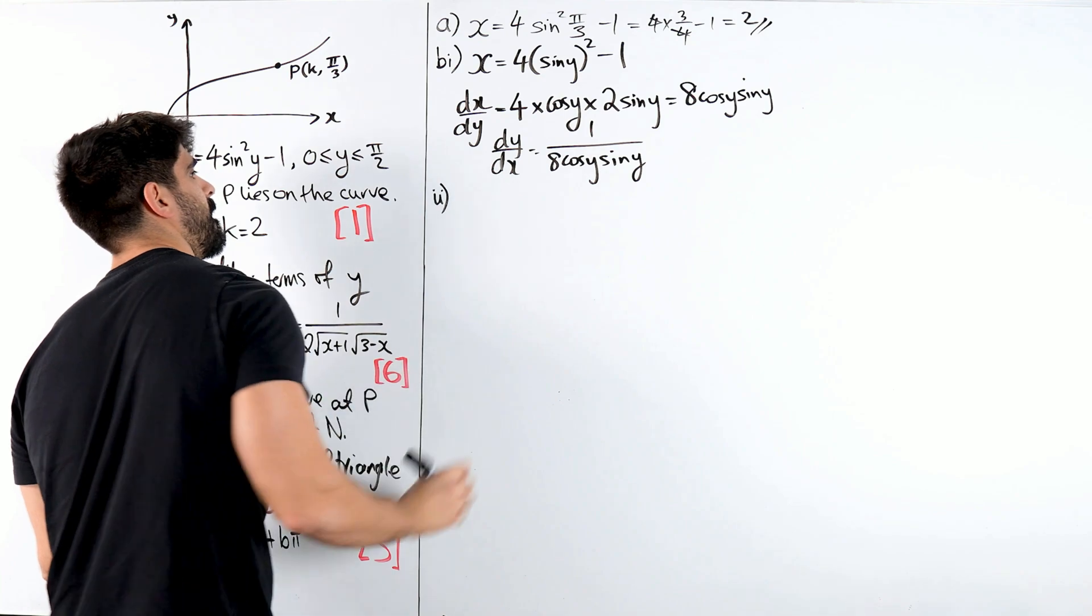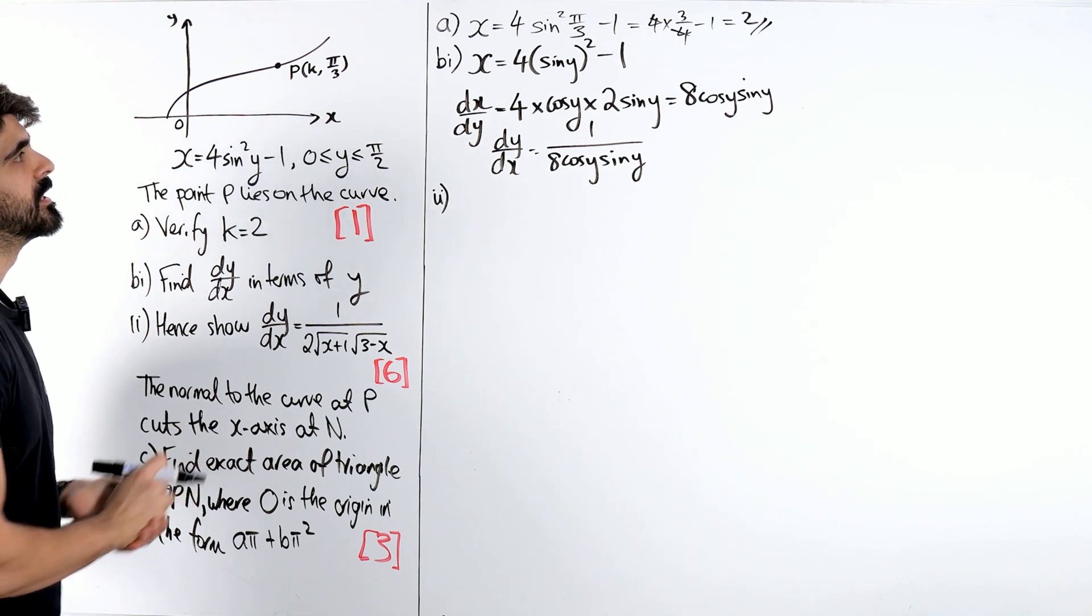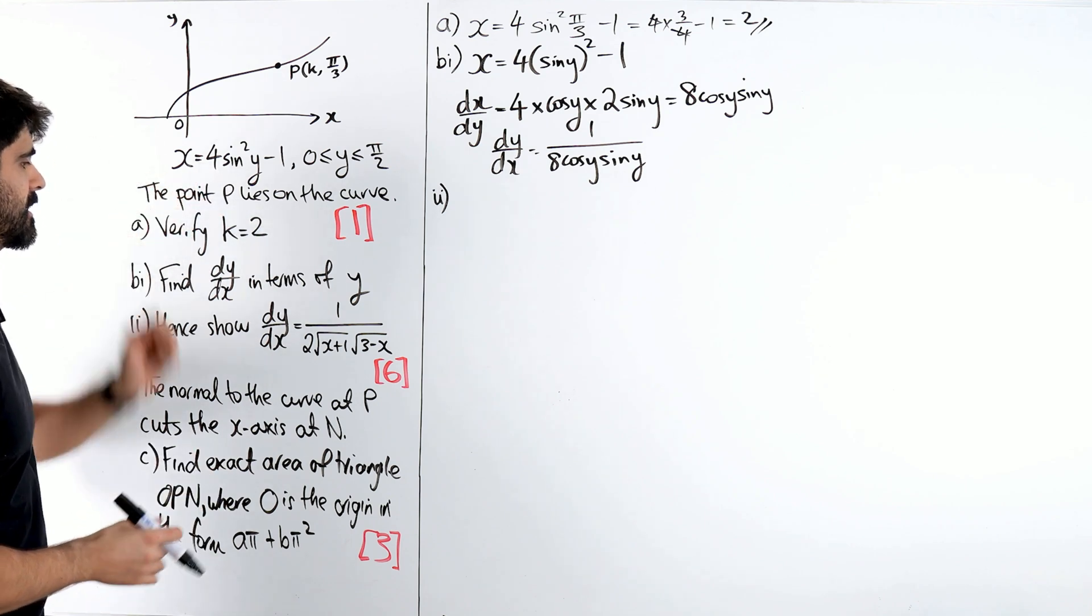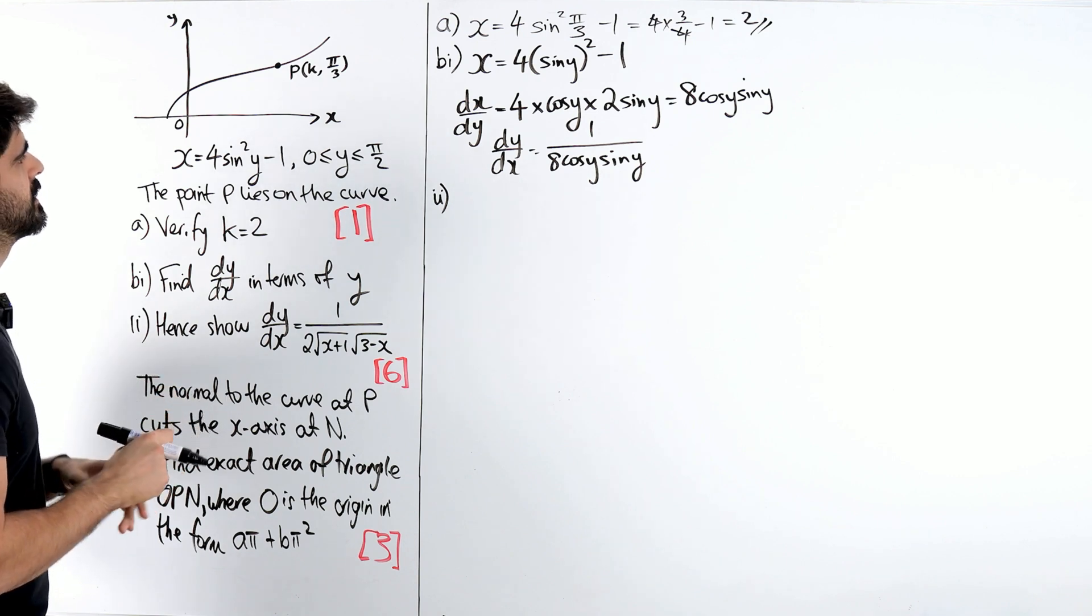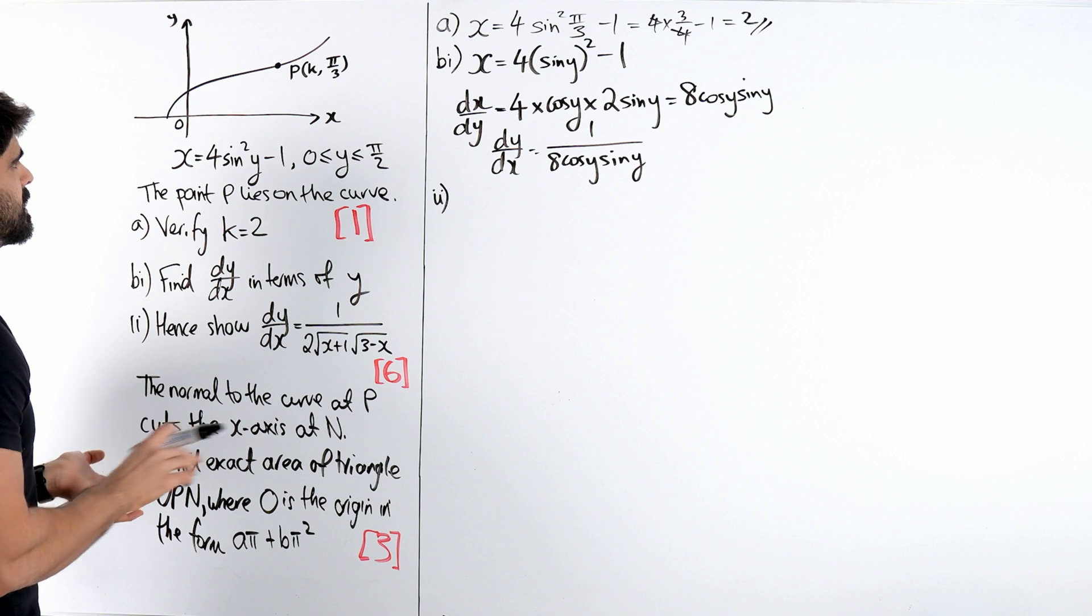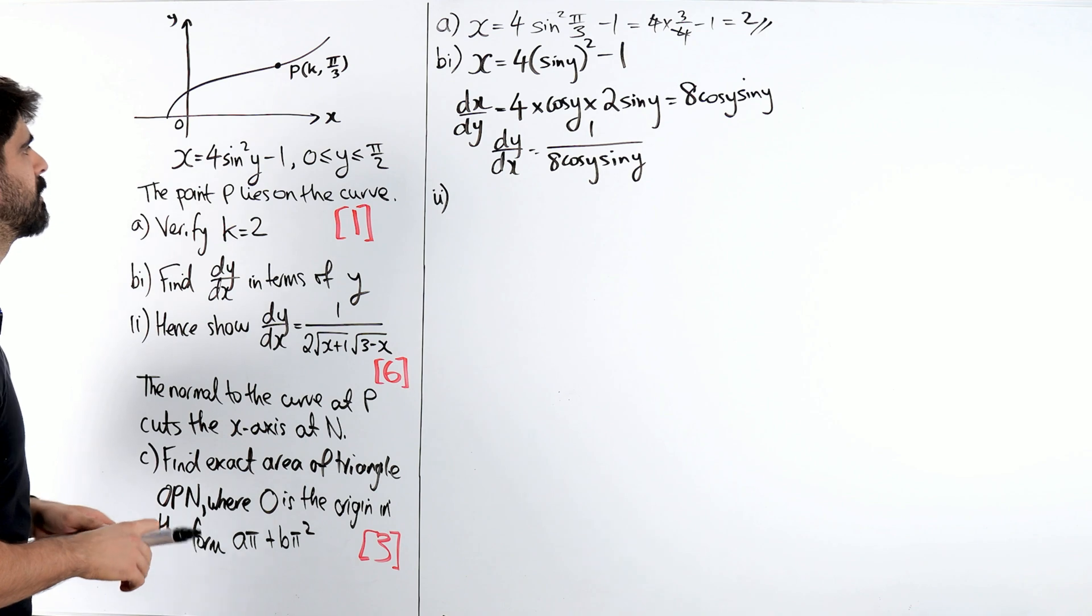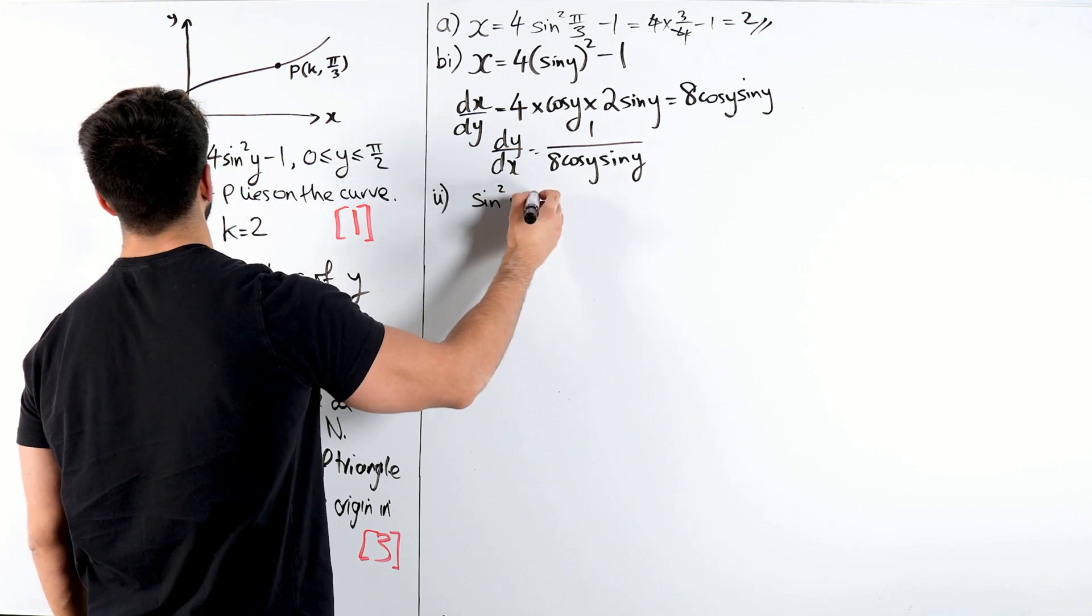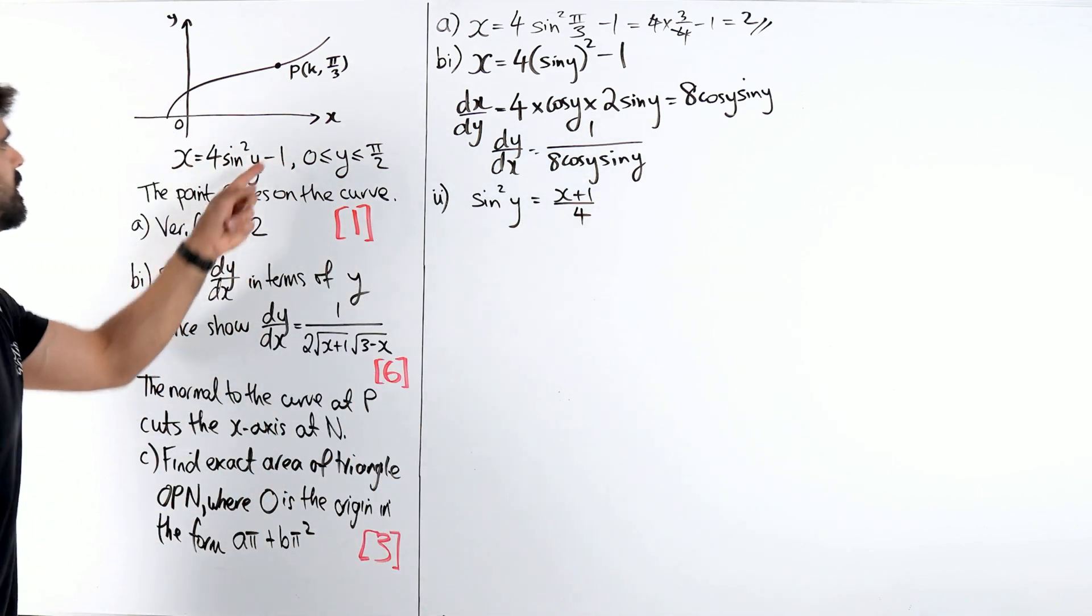Part 2 is convert it back to x. Show that dy by dx is actually that. Now we're going to have to use this to rework it back to x. Sin looks like an easy one to do, right? I'm going to rearrange for sin squared y. I'm going to add 1 divided by 4. So I get sin squared y is x plus 1 over 4.